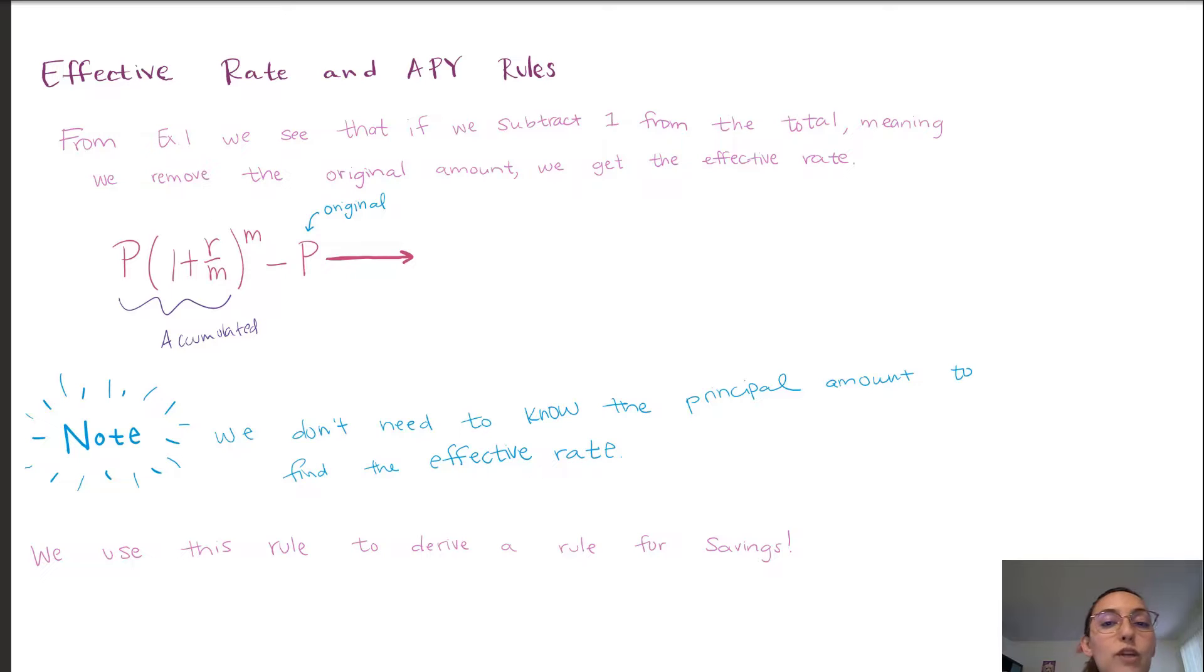Now, something that we should have noticed in the example was there was no need to take into consideration the principal amount. So we can strip the principal amount away from our formula. Thus, the rule for effective rate is going to be 1 plus r over m and this quantity raised to the m minus 1.